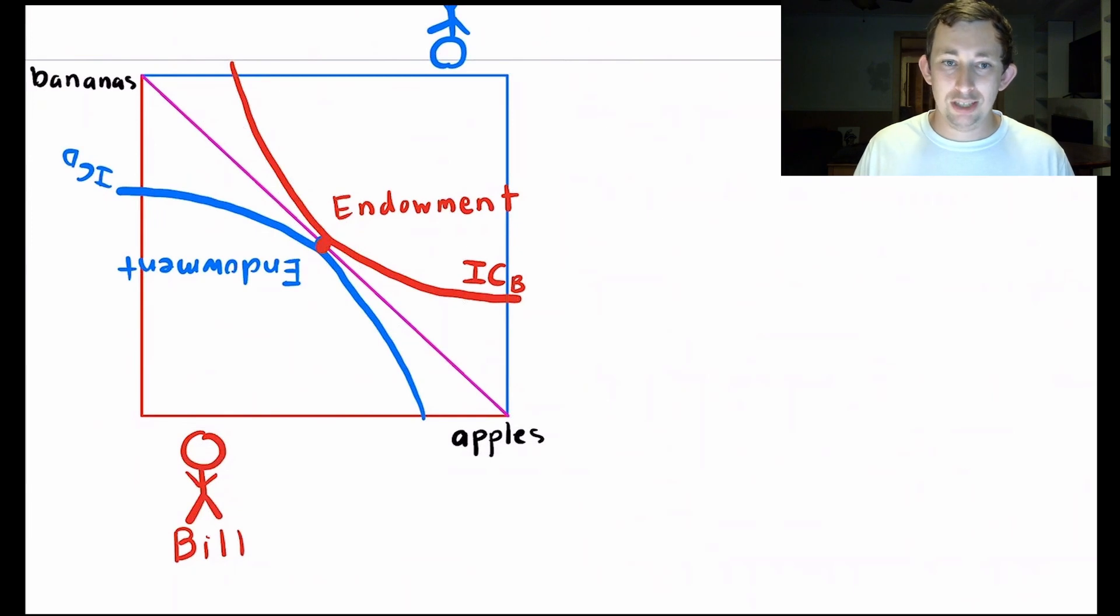And that way Bill and Dave are on the same box. Notice now that this number of apples here is not just Bill's apples. That is the total number of Bill and Dave's apples combined.